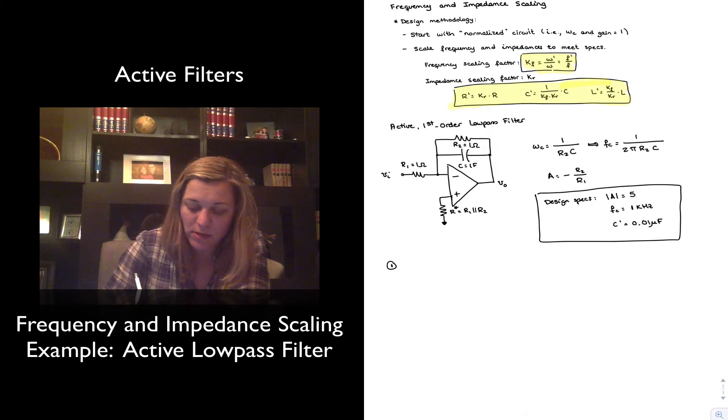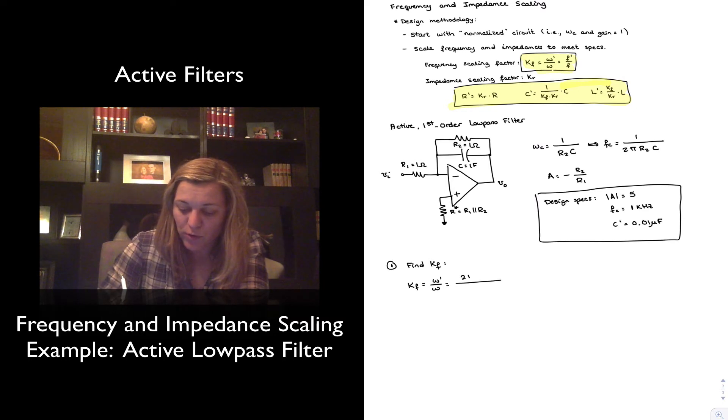Number one, as always, I'm going to find the value of my frequency scaling factor, KF. And KF, once again, is going to be equal to the ratio of Omega prime to Omega. Omega prime is 2π times the 1 kHz that I want to set my frequency to. Omega is just 1 radian per second. It's the frequency of the normalized circuit. And this gives me 6,283.185 again.